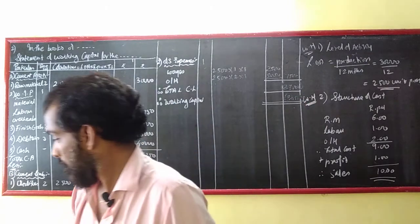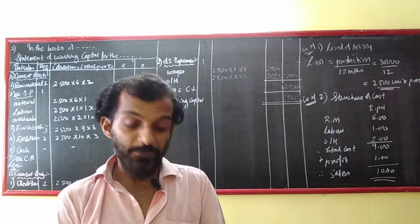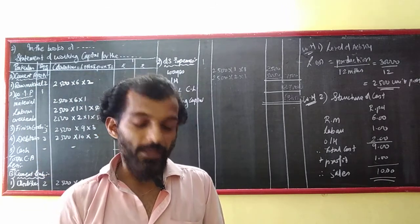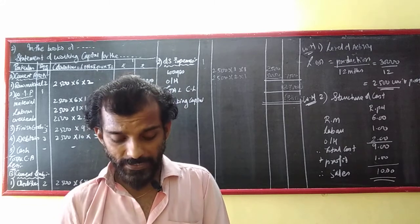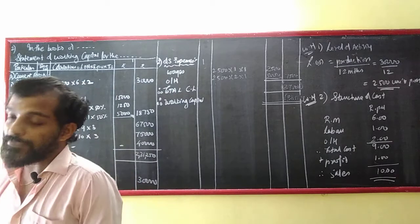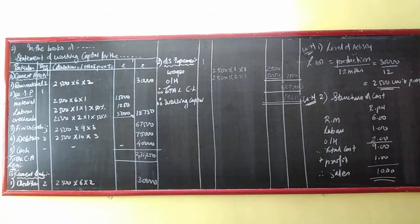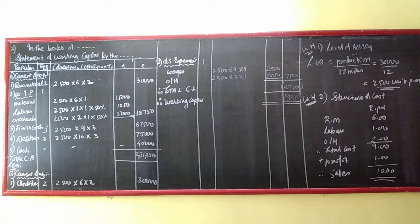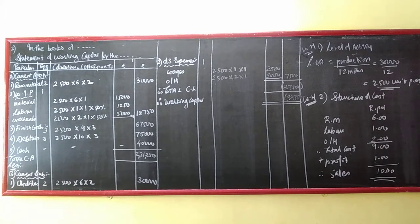Net working capital equals 2,31,250 minus 37,500, which gives 1,93,750 as my working capital. The topic is easy and you can score well. Vertical statements, ratio analysis, and working capital — all three topics are purely scoring topics, and you can achieve at least 90-92 marks easily.